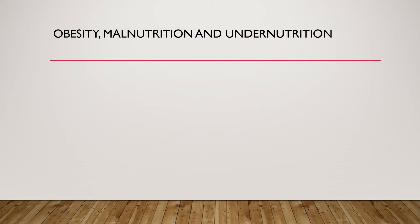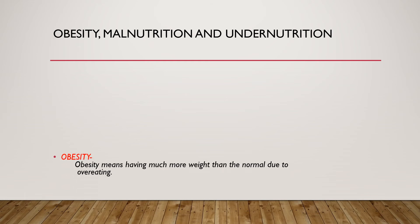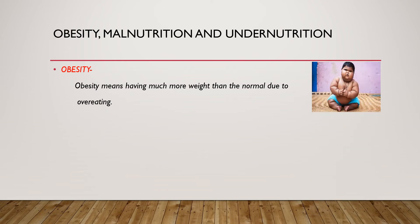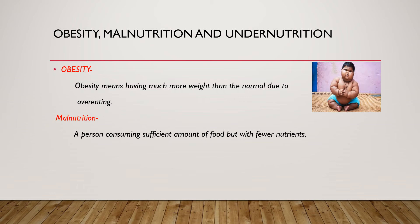Now, coming to obesity, malnutrition, and undernutrition. Obesity means having much more weight than normal due to overeating. Here you can see a picture of an obese child. People who are obese tend to consume a diet that is rich in fats, which ultimately leads to obesity.